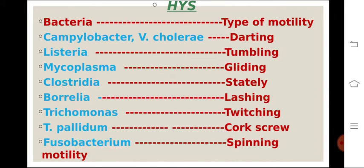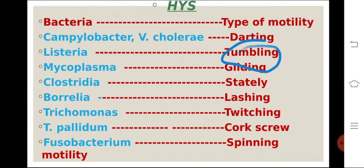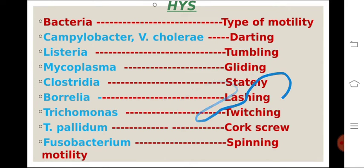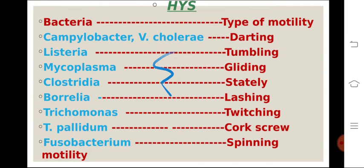Now I will cover another very important slide. In exams like NEET-PG and JIPMER, long questions are asked with limited time, so you need to focus on key words to reach a diagnosis quickly. Among those key words, organism motility can point directly to the answer. Darting motility belongs to Vibrio cholerae or Campylobacter. Listeria shows tumbling motility. Mycoplasma shows gliding motility, while Clostridia moves by stately movements. Borrelia has lashing movements. Trichomonas shows twitching movements. Treponema pallidum shows corkscrew movement, and Fusobacterium shows spinning movement.